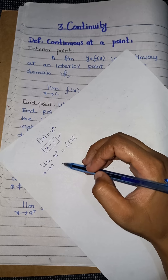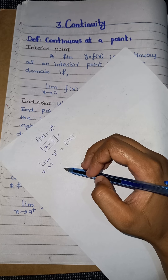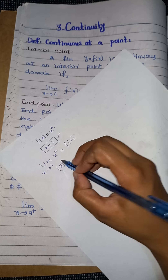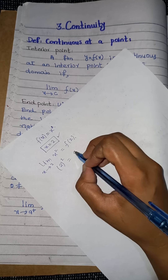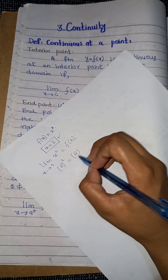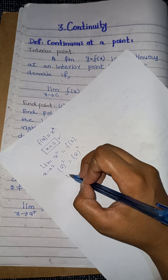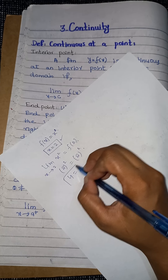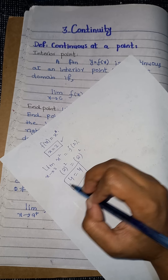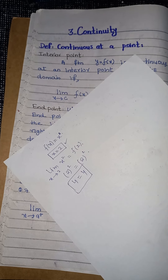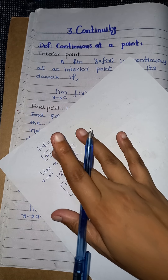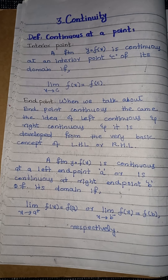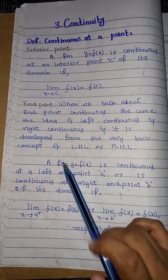For example, substituting x = 2 gives 2² = 4, and the limit also gives 4, so this condition holds and we say it is continuous at this interior point.